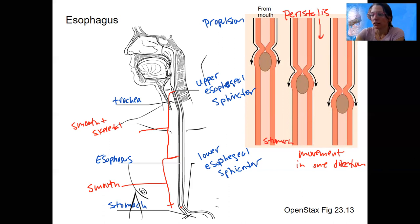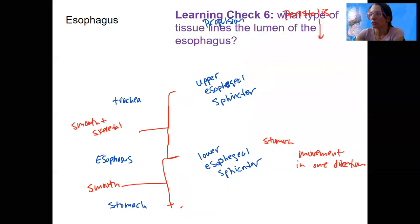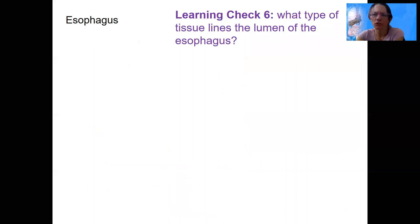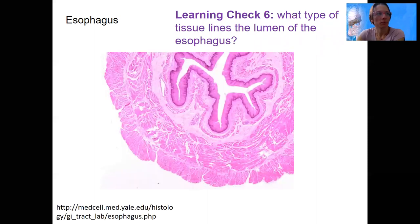Okay, so let's do a learning check while I erase this for you. What type of tissue lines the lumen of the esophagus? Do you know it? Here's a picture in case that helps. Hopefully if you didn't have it, it looks familiar now.